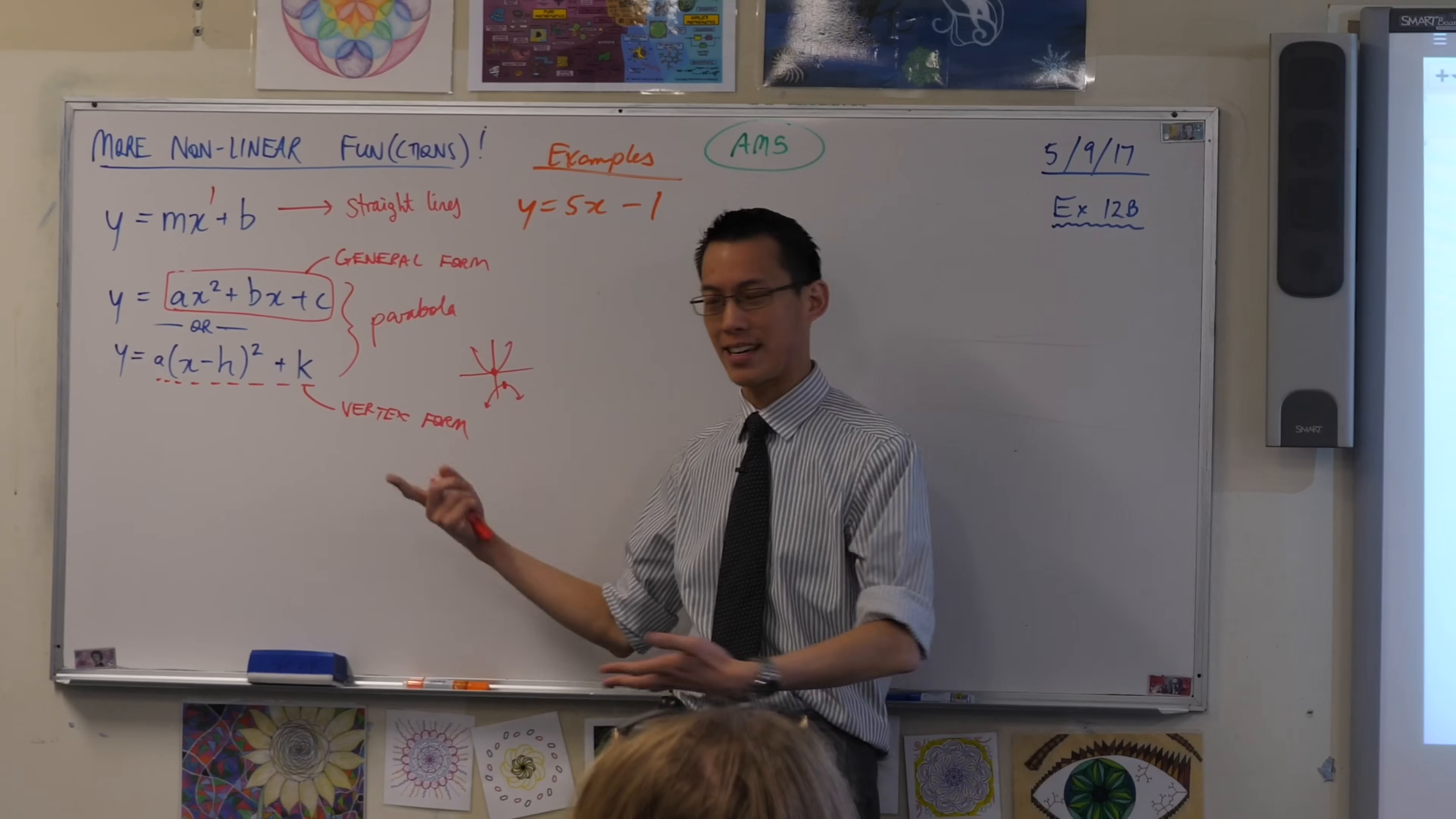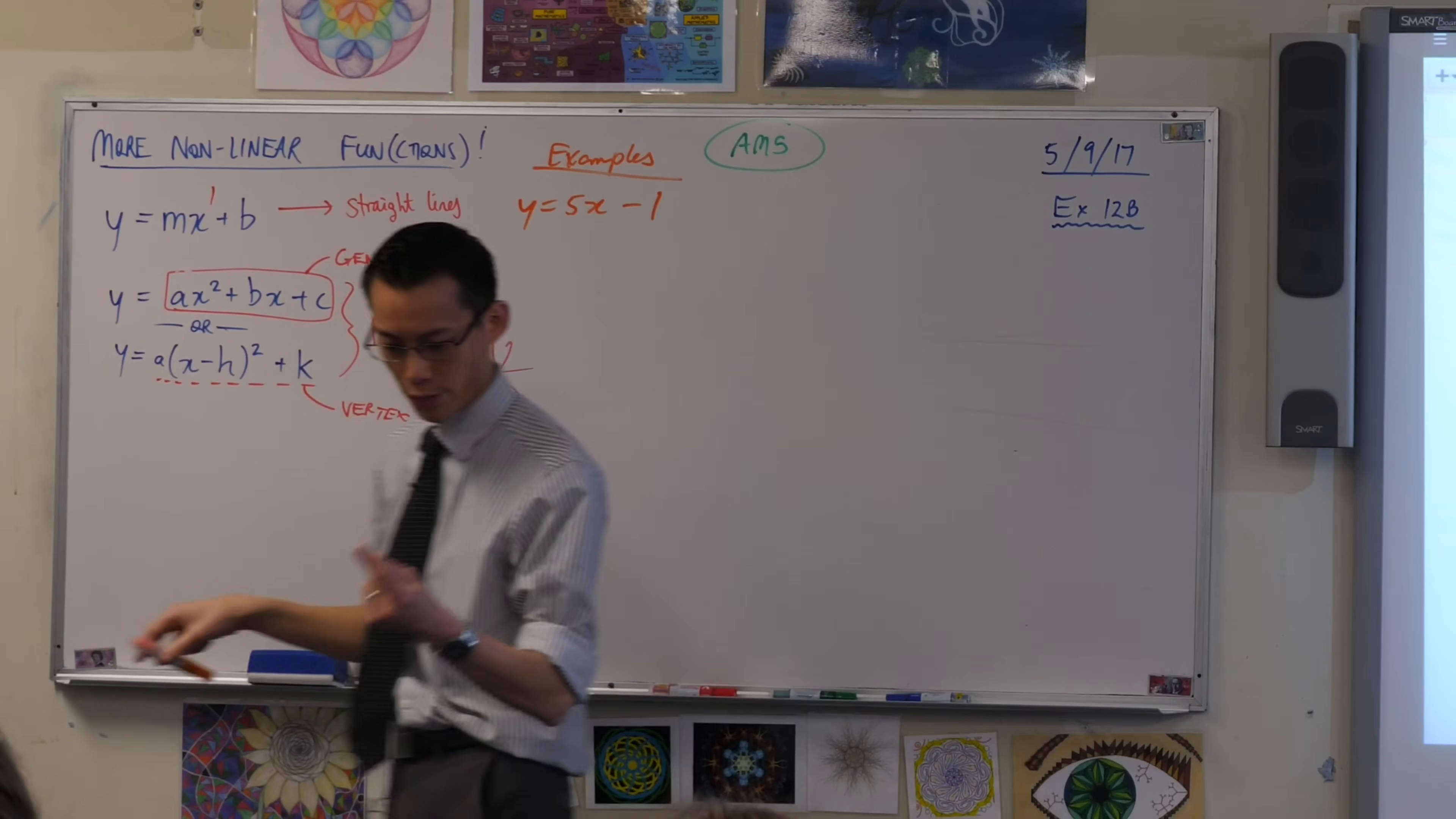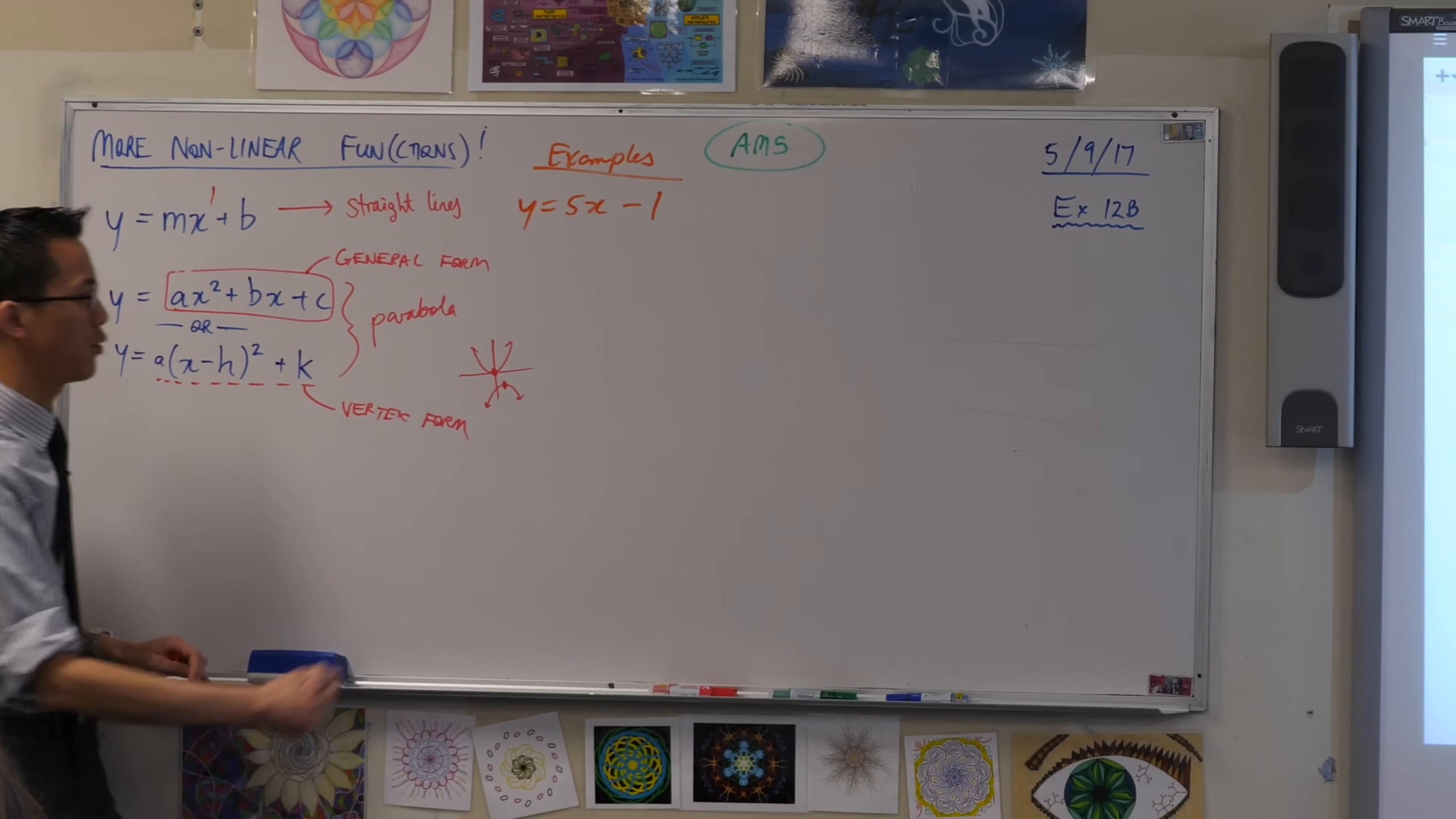Here's the nice thing about vertex form. Just like this tells you the gradient and the y-intercept right away. This gives you the vertex right away if you pay attention to these numbers. So let me just give you an example.